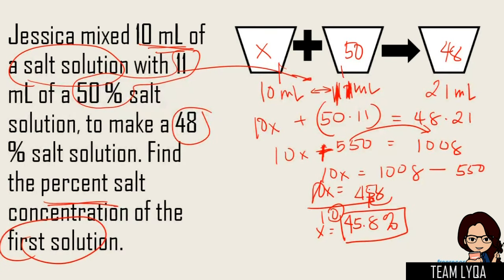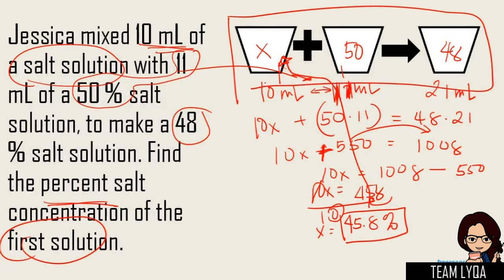So ibig sabihin, the first solution here — yun ang kanya percent concentration. Same thing — ang importante lang, ma-master ninyo kung paano itong box na to, at kung ano ang mga information na ilalagay mo sa bawat isang spot. So plot, tapos i-complete ninyo yung information and then solve down.